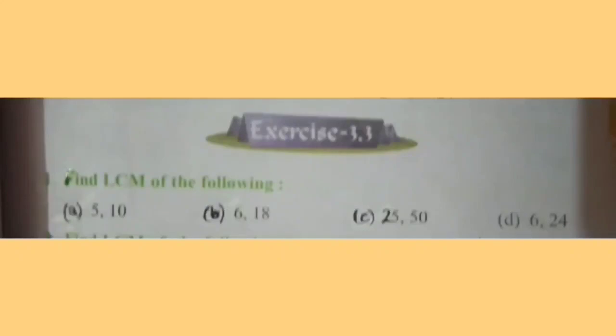Students, now we will solve part A of question number 1. First of all, write multiples of 5. These are 5, 10, 15, 20, 25, 30 and so on.